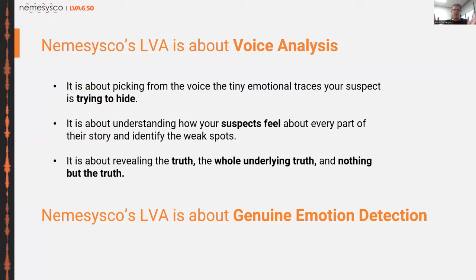Unlike the polygraph, which uses a very structured conversation with irrelevant, relevant, control, and sacrifice questions designed to provoke different reactions, LVA uses a very different approach. We want an open discussion — we want to let the suspect speak, explain their story, and let them tie their own lies around themselves. The principle of LVA is not to be as pinpointed as with the polygraph; it is about revealing the whole truth and understanding all its complexities and unique combinations.